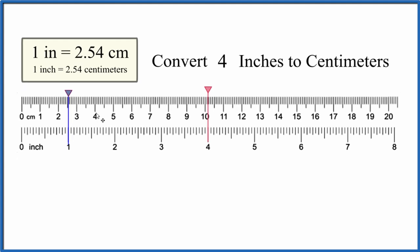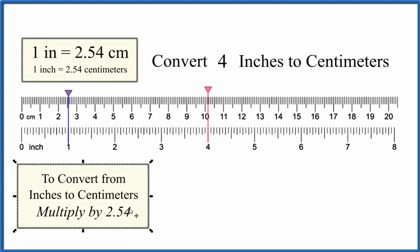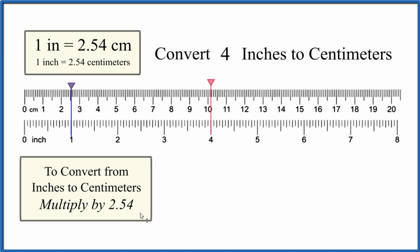So when we convert from inches, like four inches to centimeters, we're just going to multiply the number of inches by 2.54. So we take our four inches right here. We multiply it by 2.54 because one inch is 2.54 centimeters.